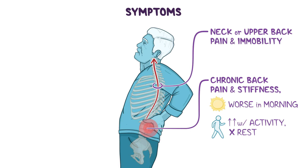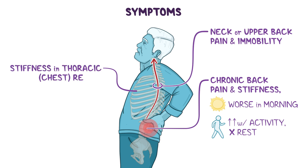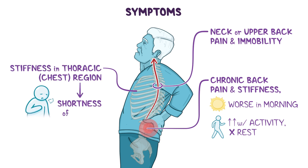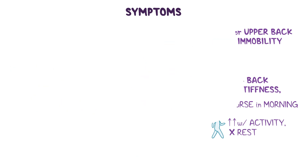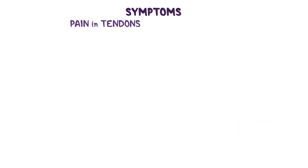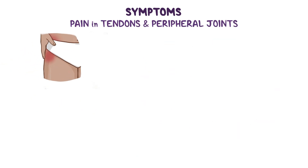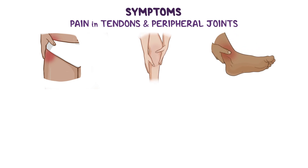Because the ribs and vertebrae are involved in breathing, stiffness in the thoracic, or chest region of the spine, can result in shortness of breath. The autoimmune process underlying AS can also lead to pain in tendons and peripheral joints, such as the hips, knees, and ankles.